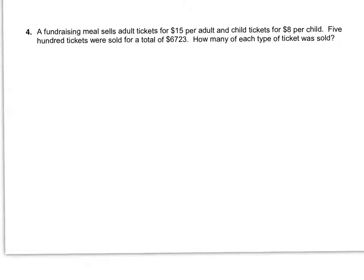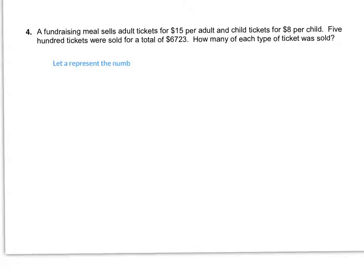We need to know how many adult tickets were sold and how many child tickets were sold. We're going to have our let statements: let A represent the number of adult tickets, and let C represent the number of child tickets. Those are our let statements, and then we need to come up with our equations.